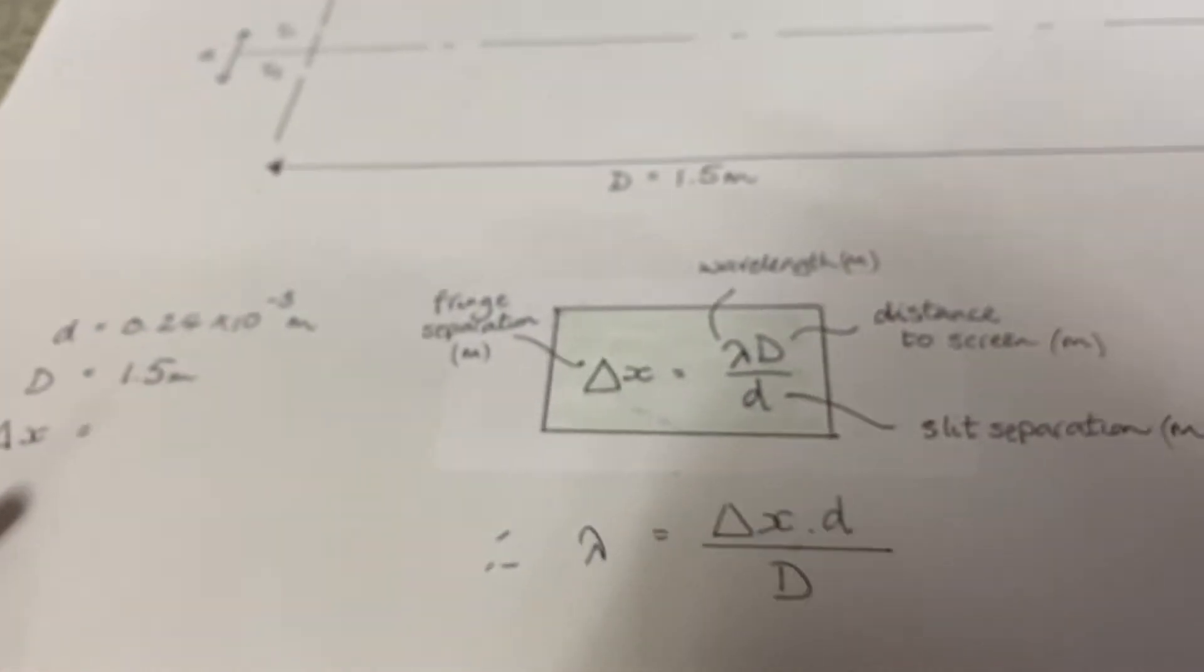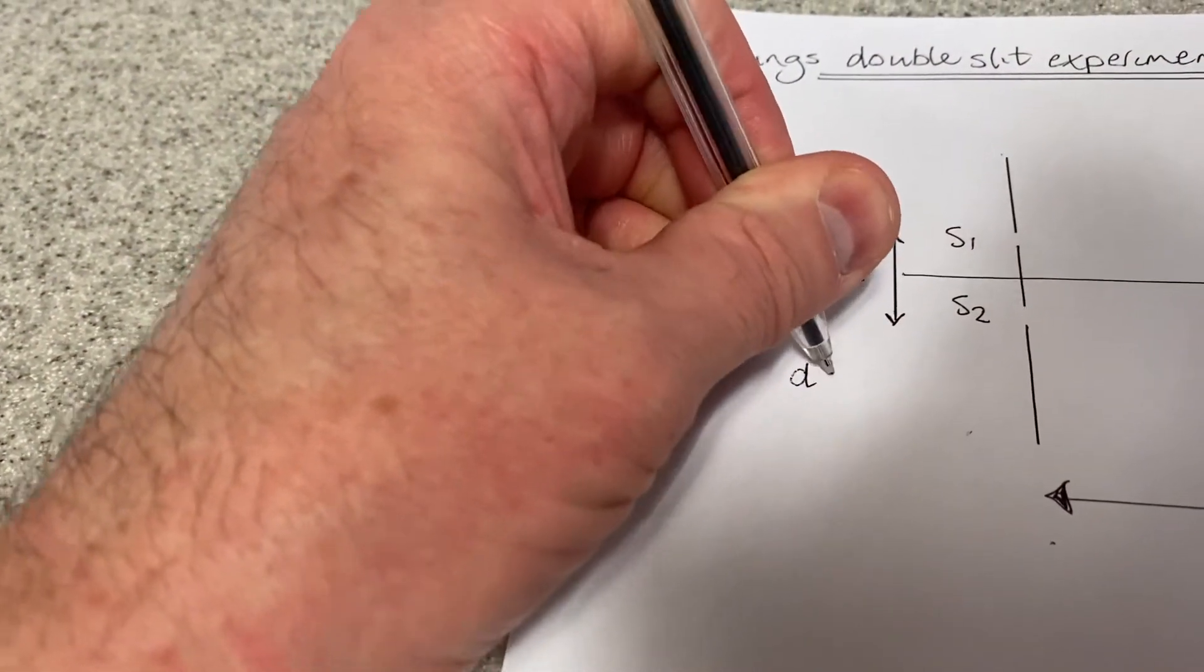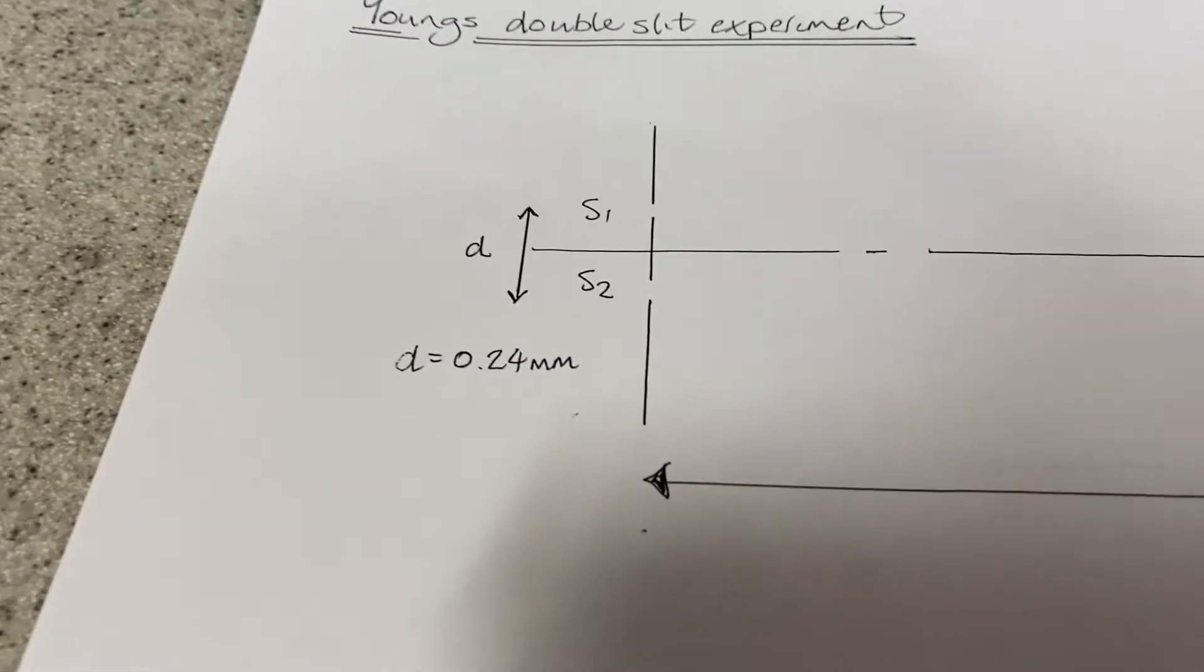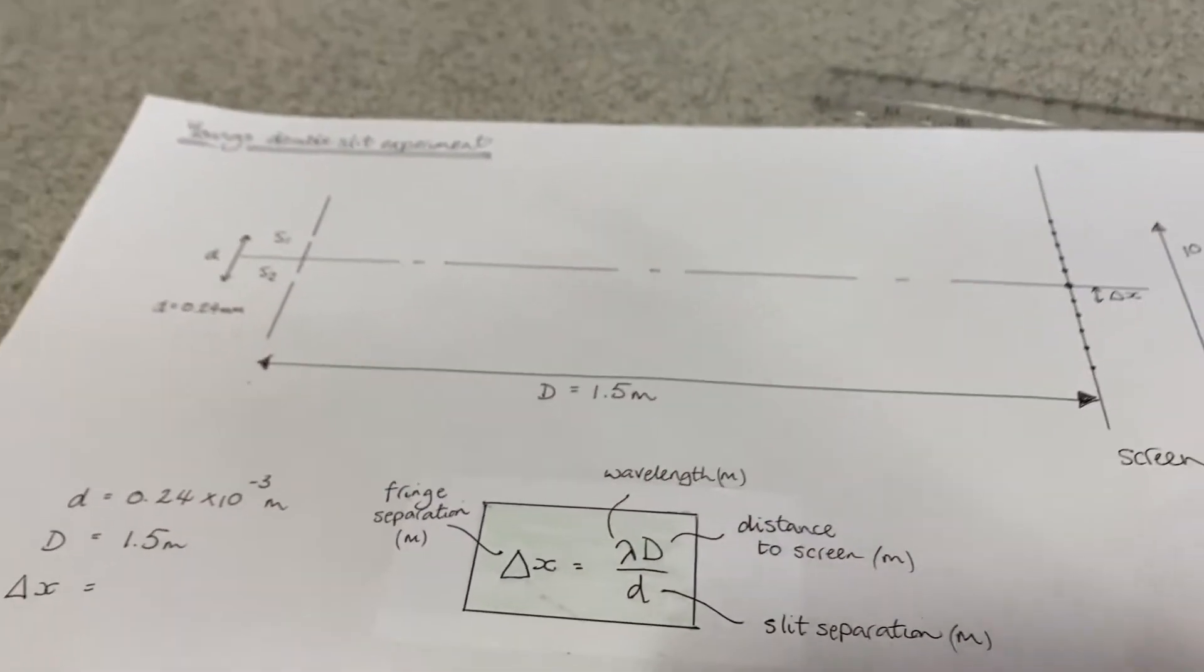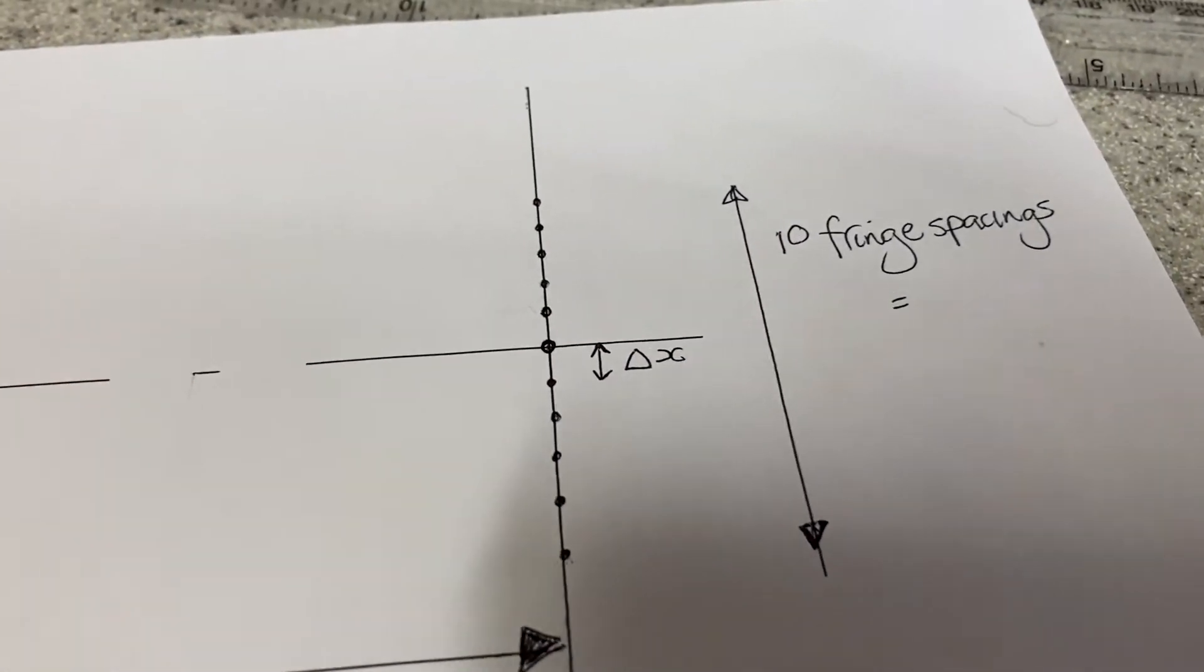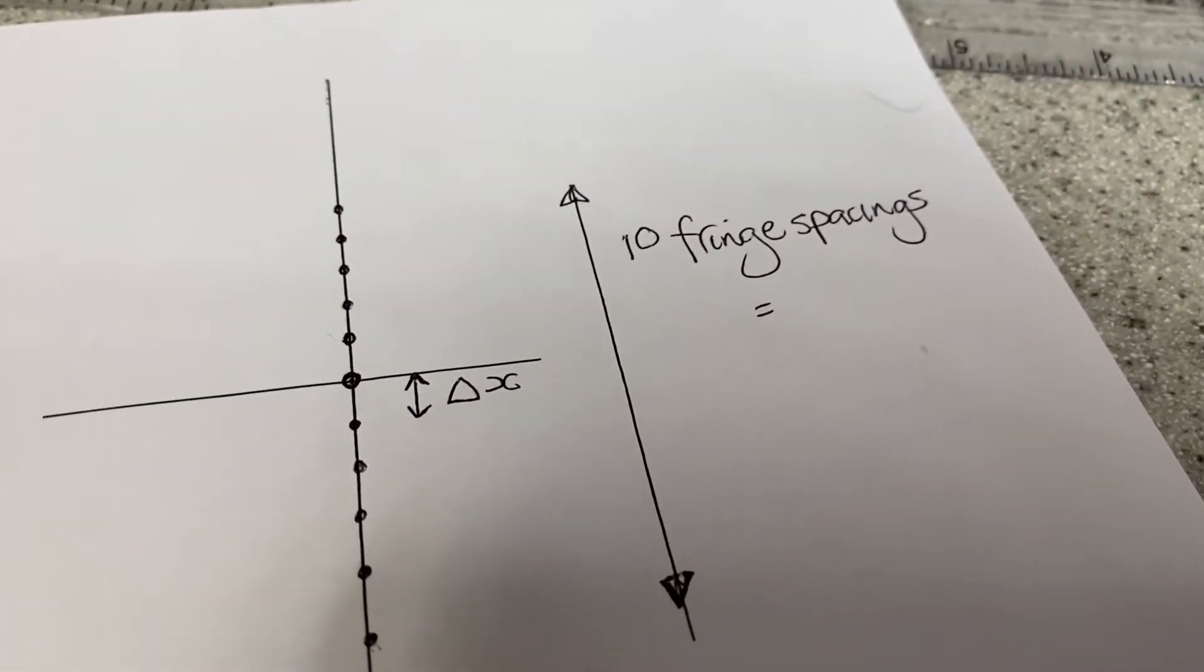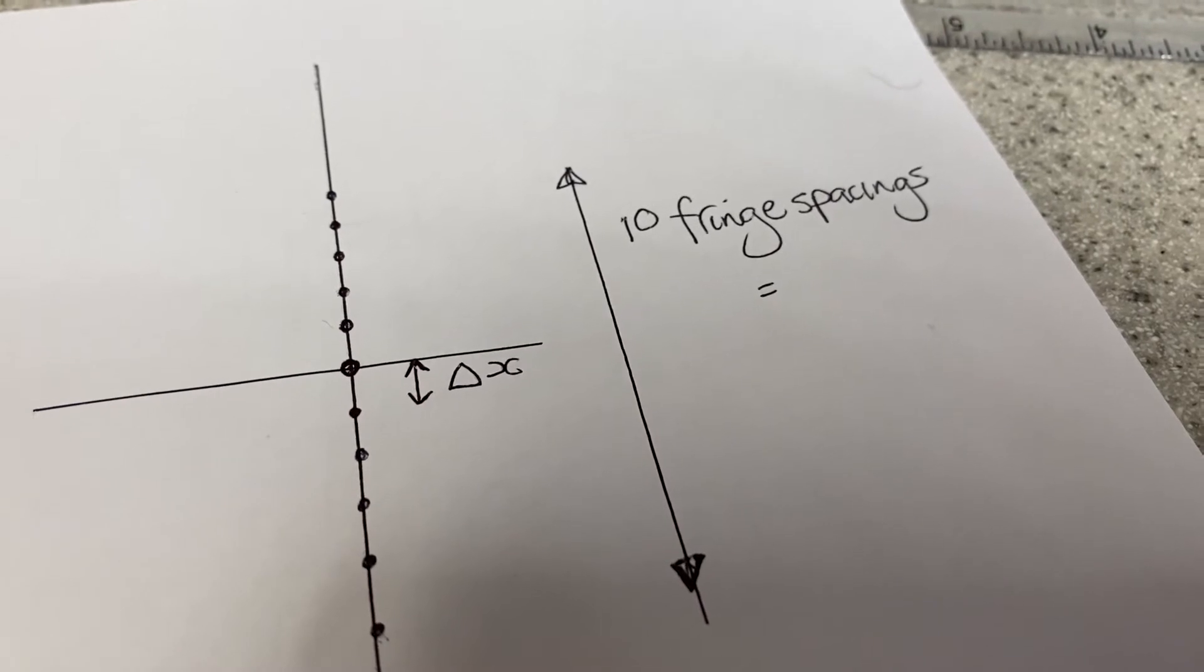I can put that onto my diagram here. The distance between the slits is 0.24 millimeters. My distance from the double slit to the screen is 1.5 meters. All that's left is to put the double slit in front of the laser and measure the fringe spacing. Measuring one fringe spacing will be too tricky, so we're going to measure 10 fringe spacings and divide by 10 to get delta X.